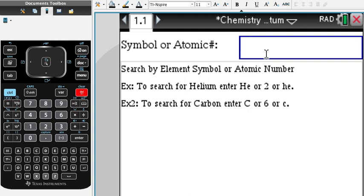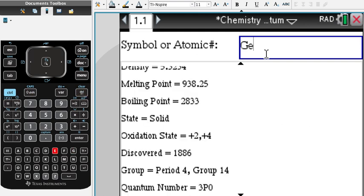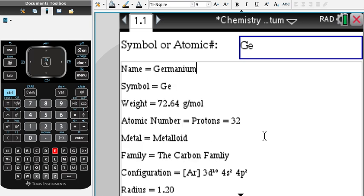Let's type in GE for germanium. And of course, first thing right here: name germanium, symbol, weight, atomic number, metal, family, configuration. It has everything—